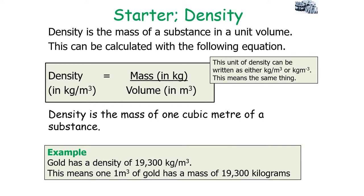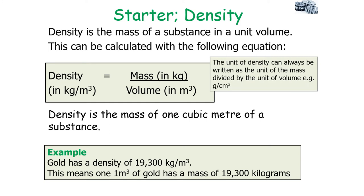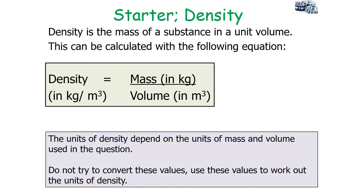Please note you can write kilograms per metre cubed or kg m to the minus 3 in either format. The unit of density is always written as the unit of mass divided by the unit of volume. So if the mass is in grams and the volume is in centimetres cubed, the density unit would be in grams per centimetre cubed. The units of density depend on the units of mass and the units of volume.